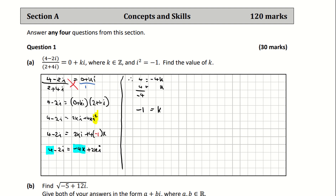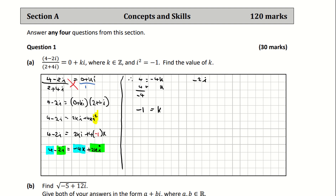You can check it with the imaginaries as well. We have minus 2i is equal to 2ki. Dividing across by i, cancelling the i from both sides, leaves minus 2 equals 2k, so k equals negative 2 over 2, which is negative 1. So we've confirmed it both ways — that's the solution to question 1a.